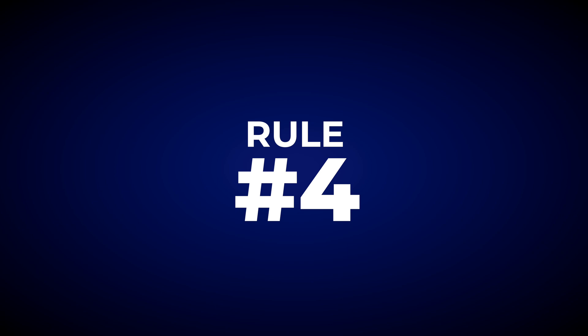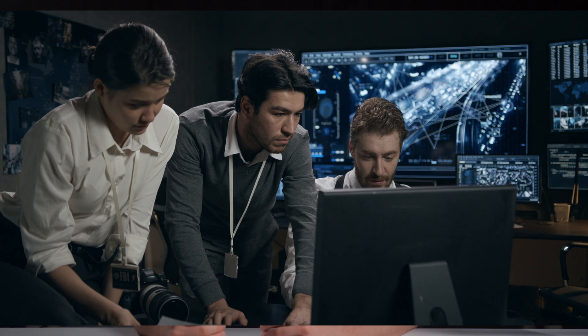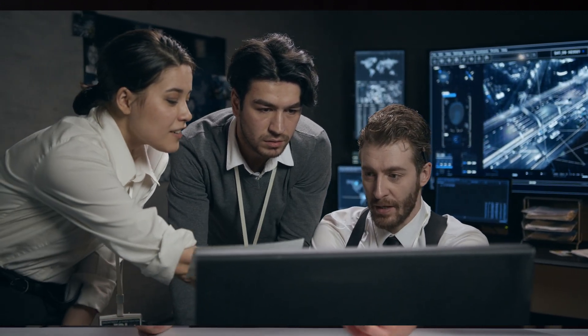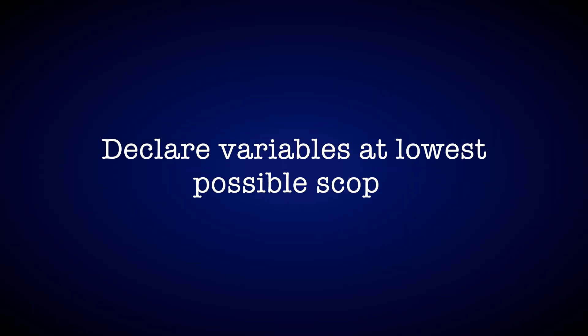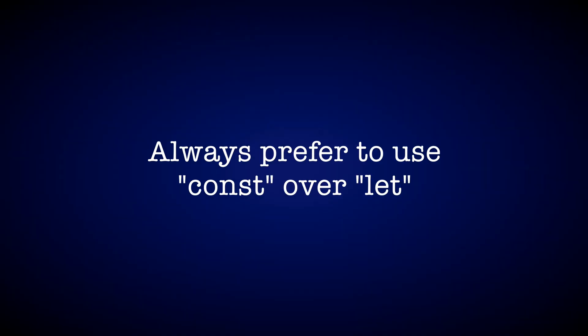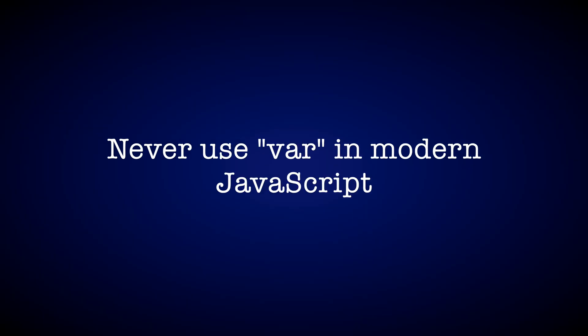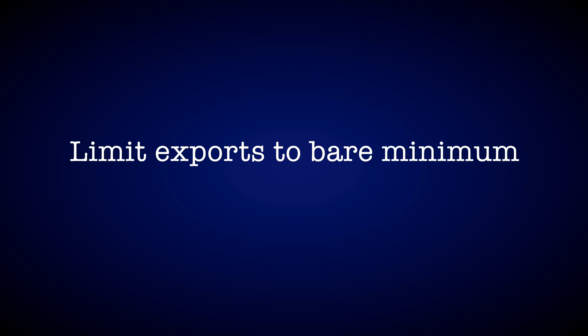Did you know that NASA also has specific rules for variables and constants? Rule number four. Have you ever spent hours tracking down a bug, only to find it was caused by a global variable that suddenly changed its value? It's frustrating. NASA engineers know this, and that's why their coding standards explicitly require variables to be declared at the lowest possible scope — keep your variables close to where you actually use them. There are three things to consider. First, always prefer const over let whenever your variable doesn't change; if it does change, use let, and never ever use var in JavaScript. Second, use closures to encapsulate variables and keep data private by scoping them within the function. Third, when you write modules, expose only what is absolutely necessary — keep your exports minimal and clean.